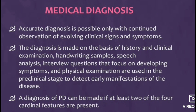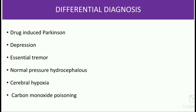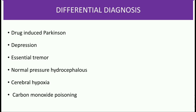Accurate diagnosis of Parkinson's disease is possible only with continued observation of evolving clinical signs and symptoms. Diagnosis is made on the basis of history and clinical examination. Handwriting samples, speech analysis, interview questions focusing on developing symptoms, and physical examination are used in the preclinical stage to detect early manifestations. A diagnosis of PD can be made if at least two of the four cardinal features are present. Differential diagnoses include drug-induced Parkinsonism, depression, essential tremor, normal pressure hydrocephalus, cerebral hypoxia, and carbon monoxide poisoning.